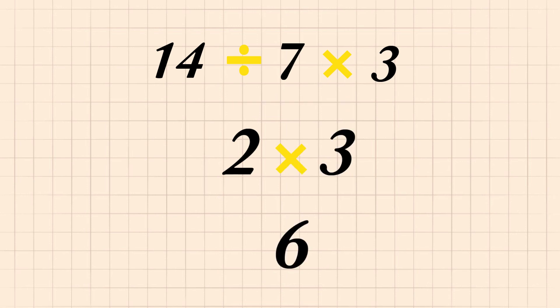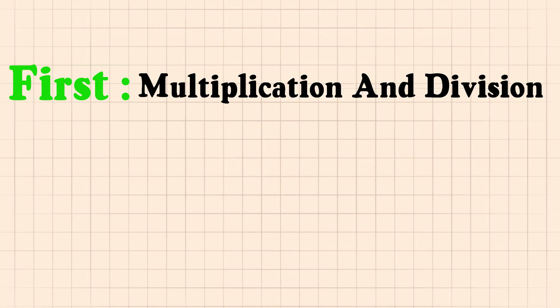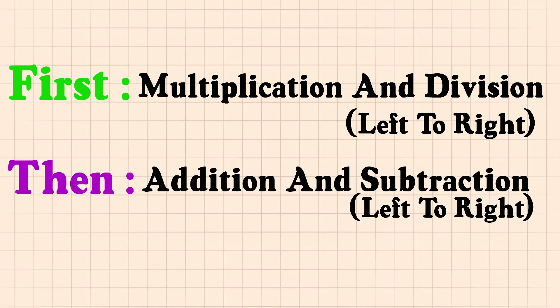Now we have completely understood the order of operations. Let's review the rules. First, do multiplication and division — left to right if we have multiplication and division together. Then do addition and subtraction — again, left to right if we have addition and subtraction together.